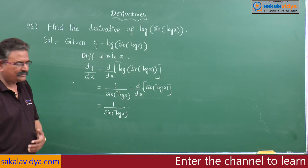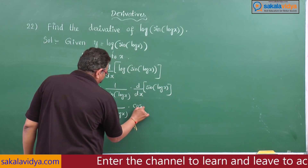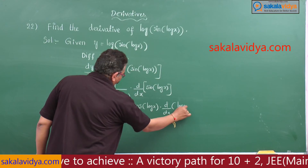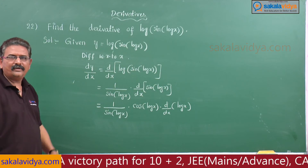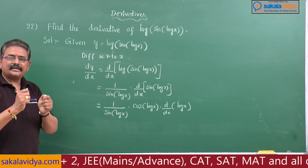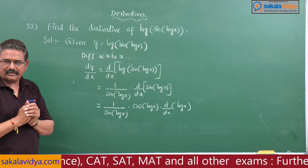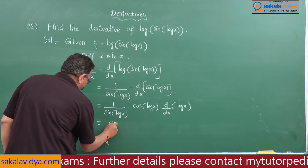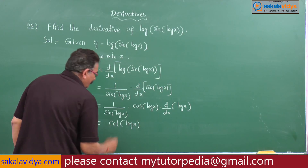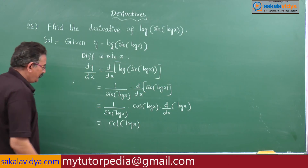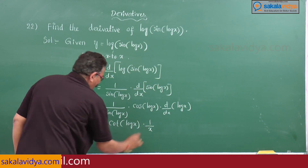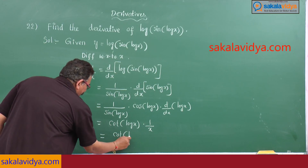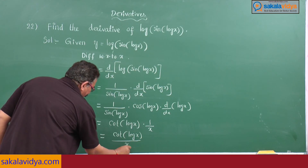The derivative of sin is cos, so we get cos of log x into d/dx of log x. Now, cos of log x by sin of log x is in the form cos θ by sin θ, which is cot θ. So this becomes cot of log x, and the derivative of log x is 1 by x. Therefore, the answer is cot of log x by x.